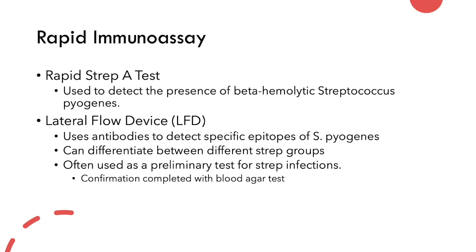This lateral flow device, the group A strep test, allows us to differentiate between different strep groups. It's very specific and is usually used as a preliminary test for the presence of a strep infection.